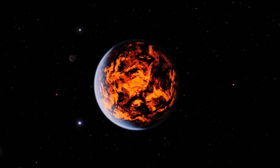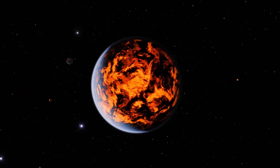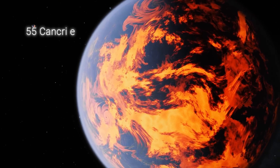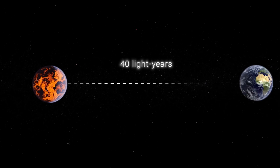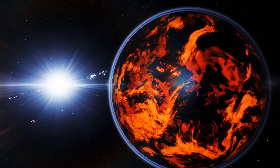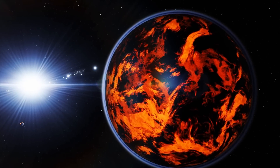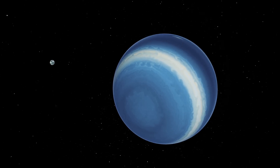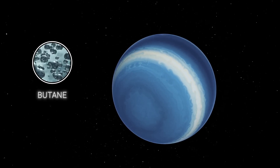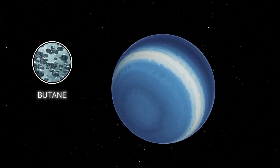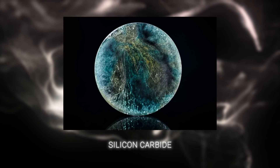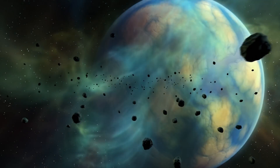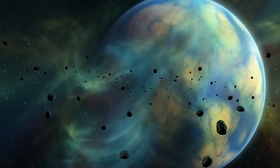Surprisingly, another candidate for silicon-based life are hypothetical carbon planets. At the moment, scientists only know of one such exoplanet — 55 Cancri e, located 40 light-years away from Earth. These planets likely form further from their parent star, meaning they may have solvents suitable for silicon and hypothetically no water. Moreover, carbon planets may be full of heavy hydrocarbons like butane, which may be suitable for silicon-carbon bonding. However, silicon carbide compounds are very strong, meaning their decomposition can take a lot of time and energy, so even if life begins to develop on a carbon planet, it will be a very long process.